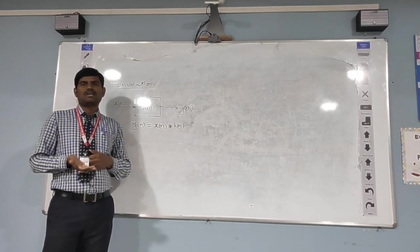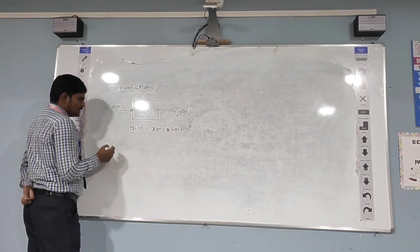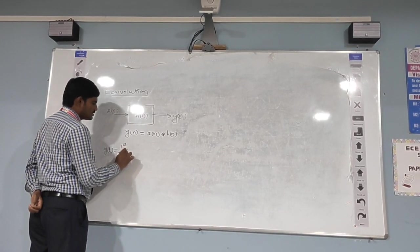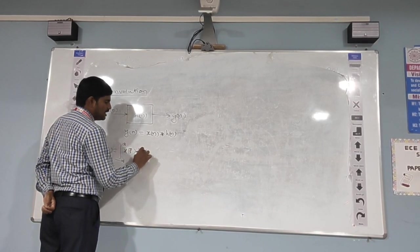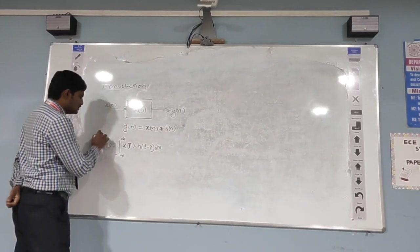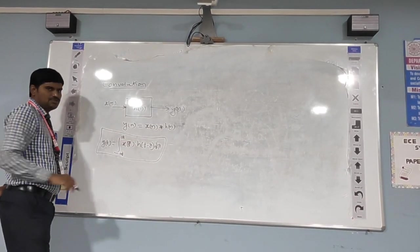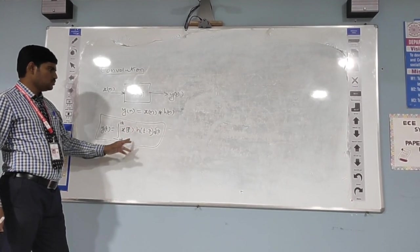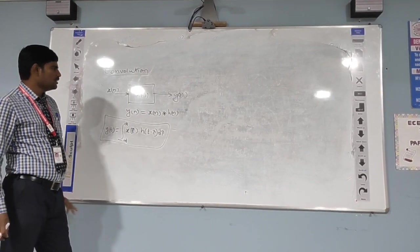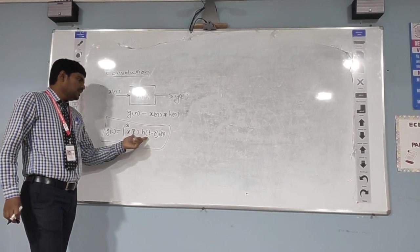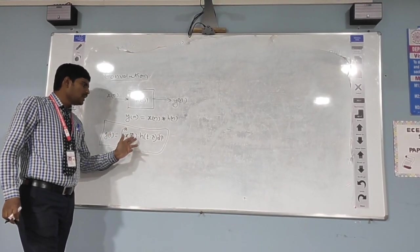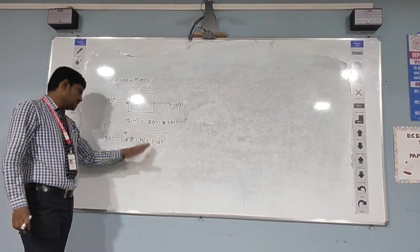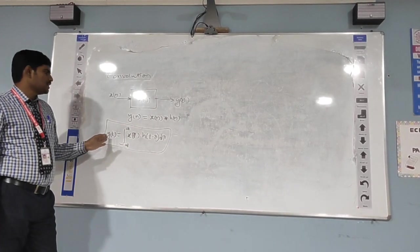For continuous time systems, we write the relation as: y(t) is equal to the integral from minus infinity to plus infinity of x(τ) into h(t − τ) dτ. This is the expression for continuous time convolution. The integration evaluates the common area under the two signals — the input signal and the impulse response. That common area is nothing but the response of the system.